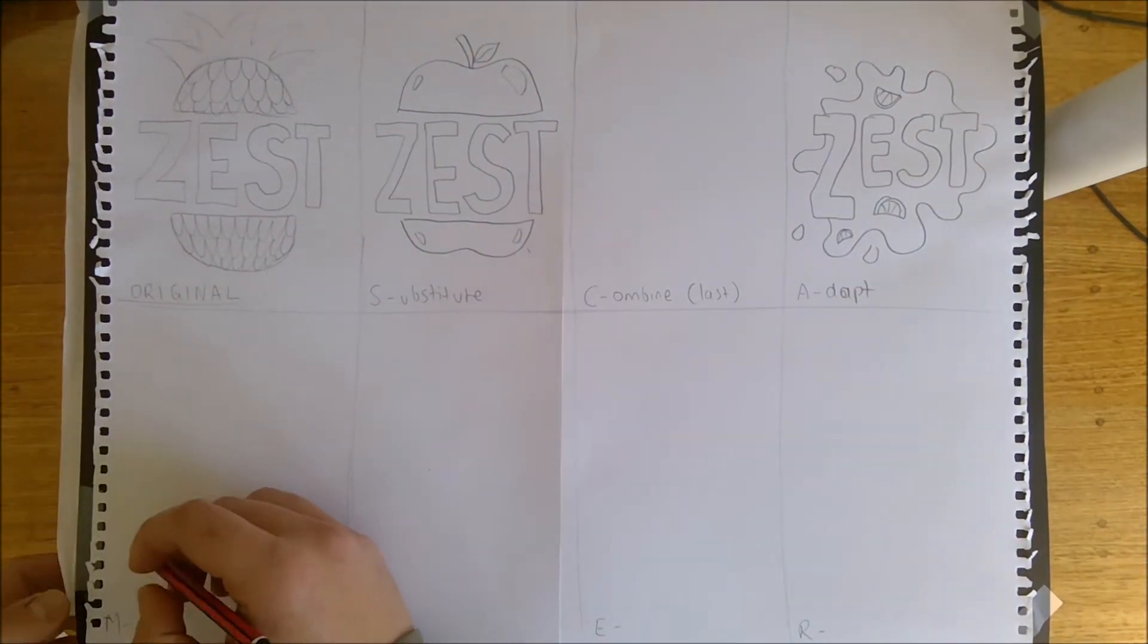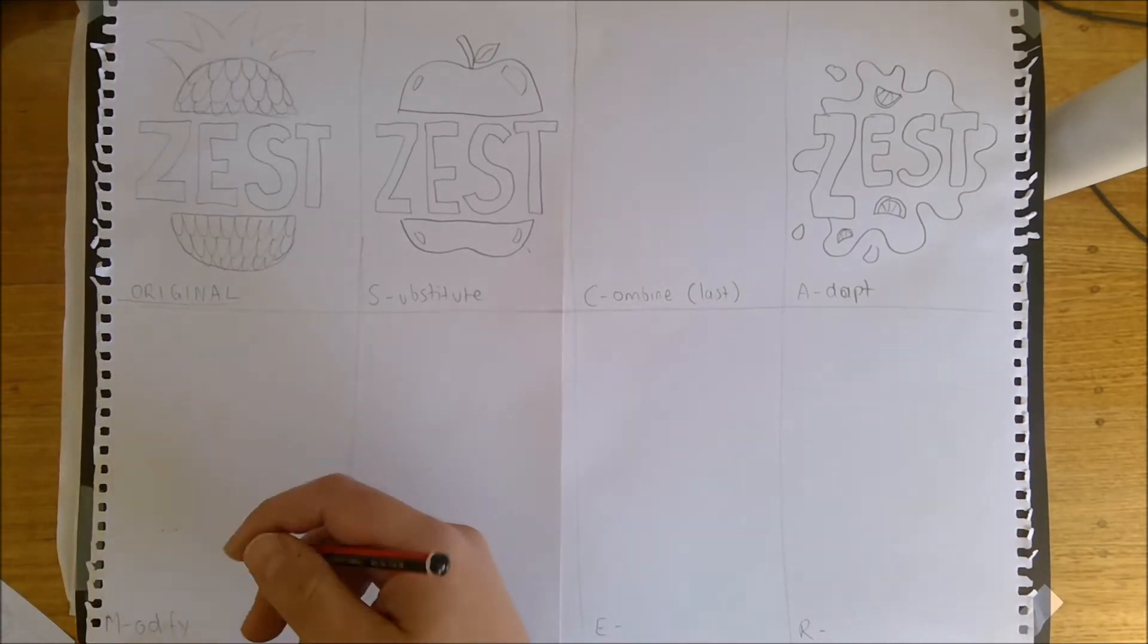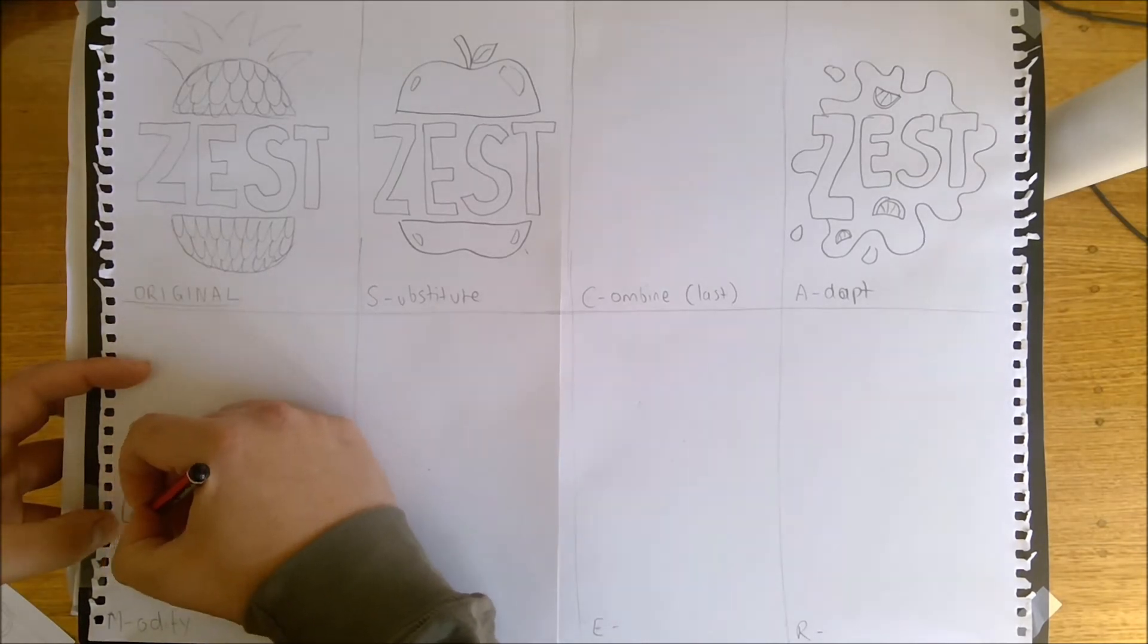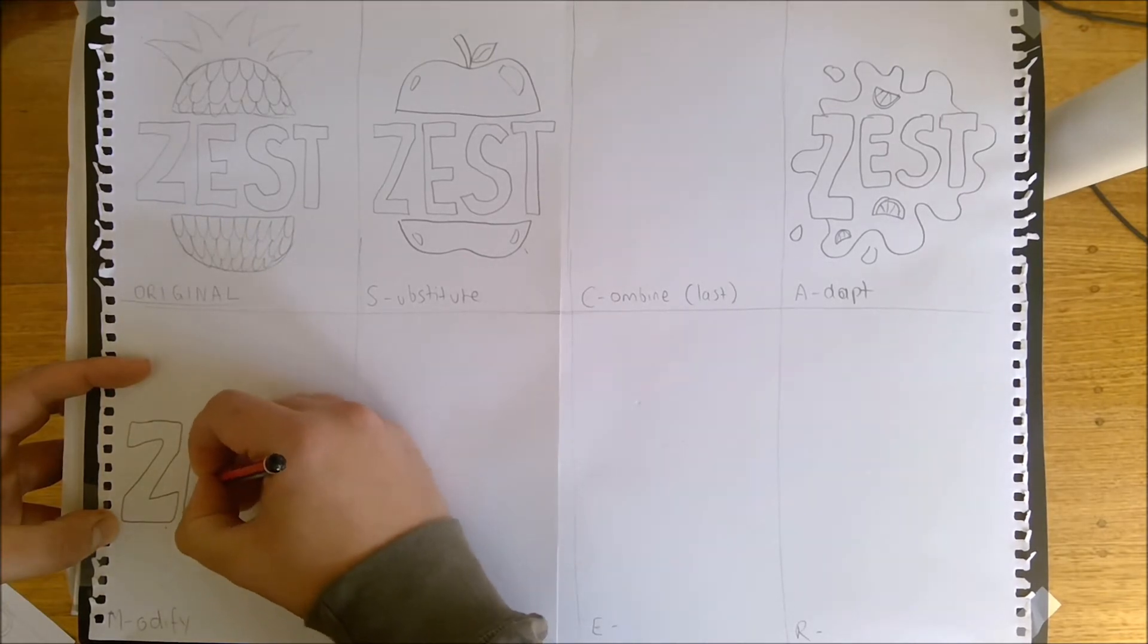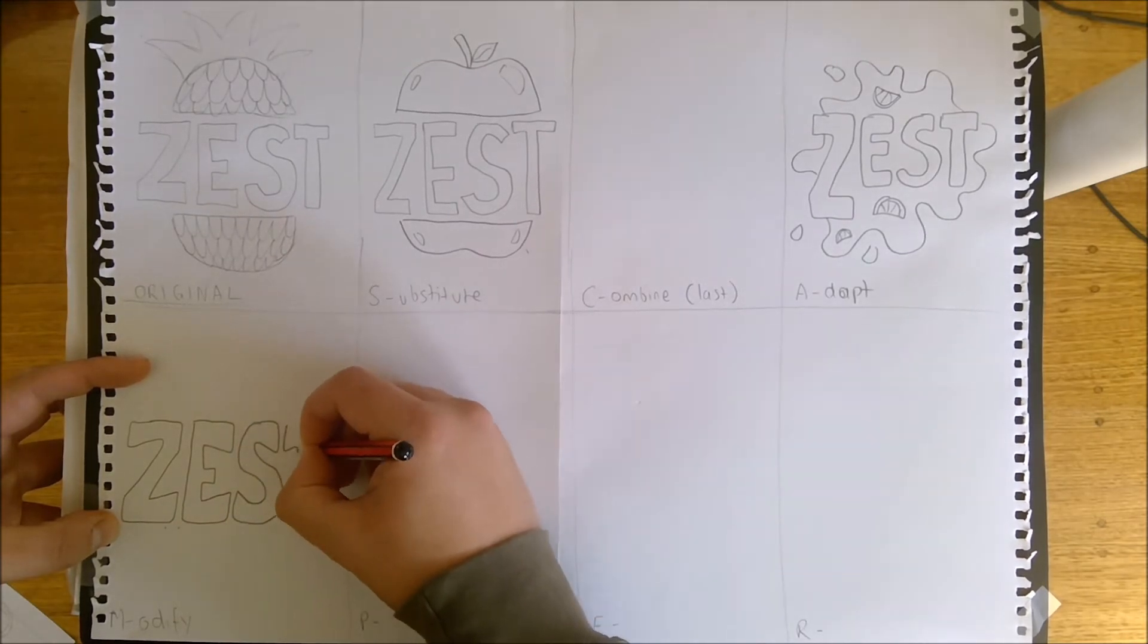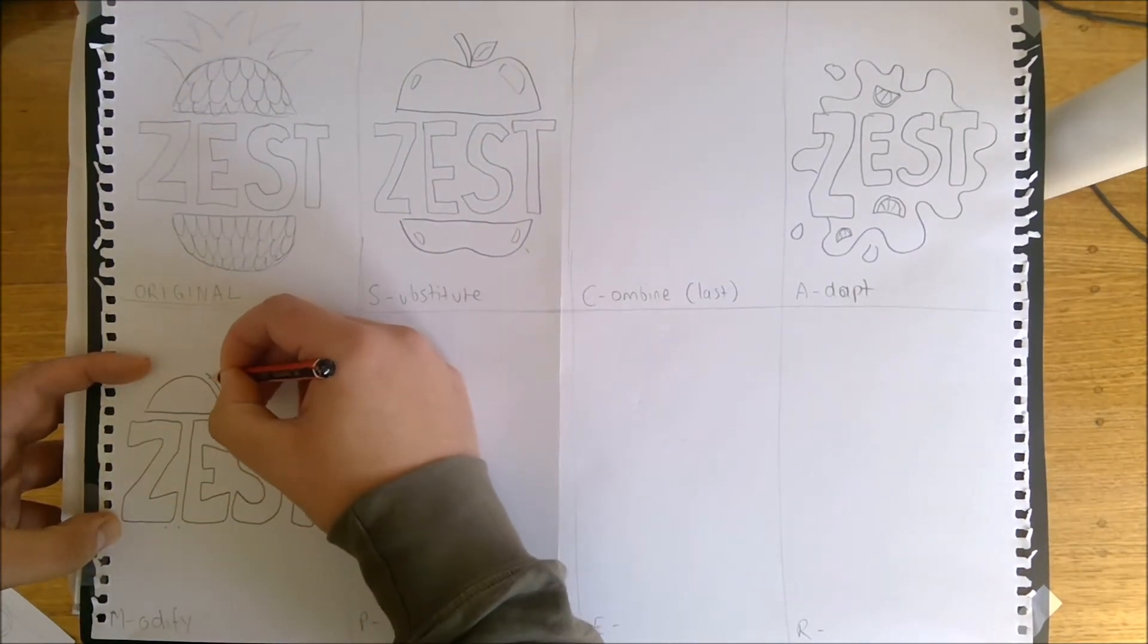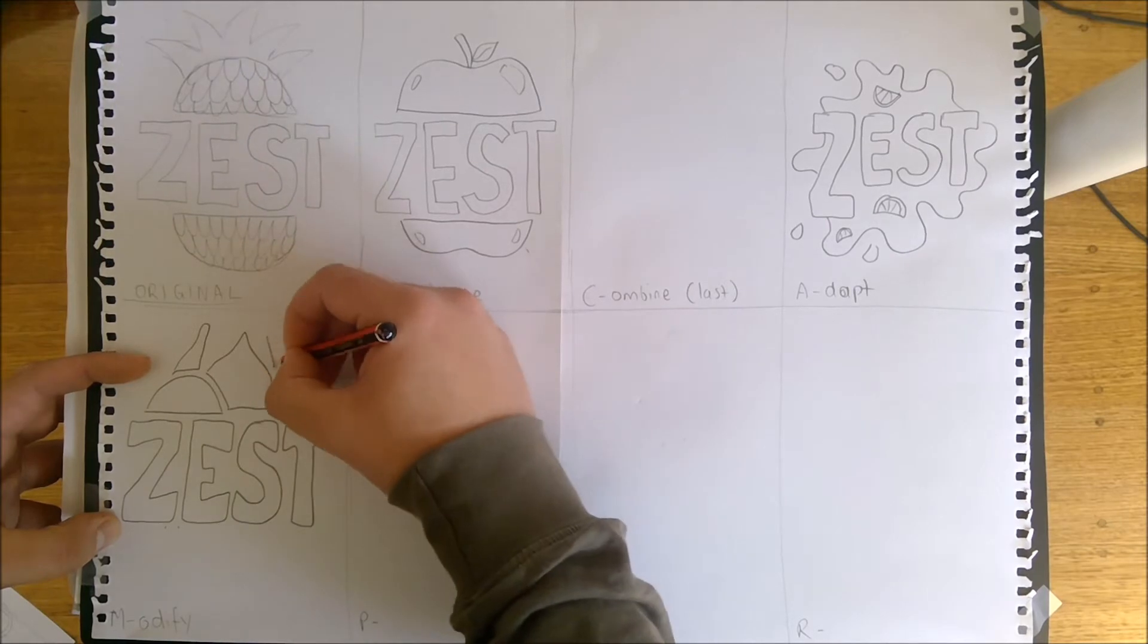The bottom one here for M is modify. So for modify, you need to modify the overall look of the design, so it needs to be changed, it might need to be enhanced in certain ways. What I'm going to do is I'm going to modify my type to be a bit more direct or a bit more diagonal. So we can see that I'm altering the typeface to be a little bit different but similar still in overall style.